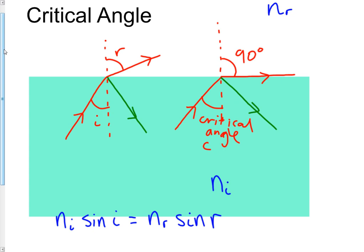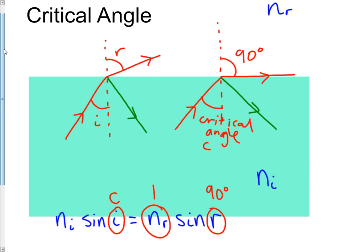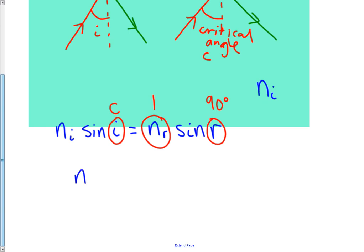If we're trying to find the critical angle, our angle of incidence is C, the critical angle. When we're at the critical angle, R is 90 degrees. On your syllabus, you're always going into air, and the refractive index of air is 1. For the AQA GCSE syllabus, you're only dealing with going from a material to air. So if we write this out again: NI sin C equals sin 90 degrees.